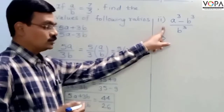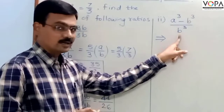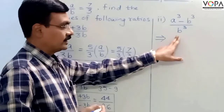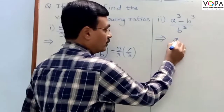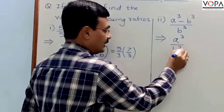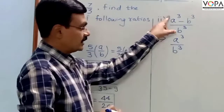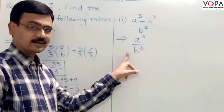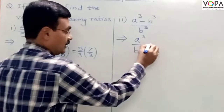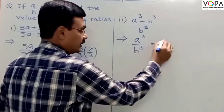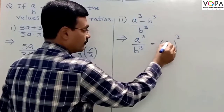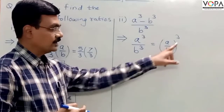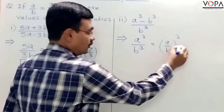The second ratio whose value is to be determined is A cube minus B cube upon B cube. To find the value of this ratio, we first have to find the value of A cube upon B cube. We know that A cube upon B cube equals the cube of A upon B.